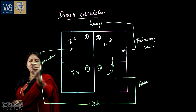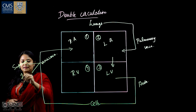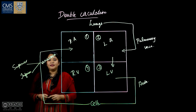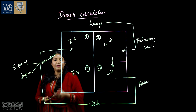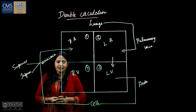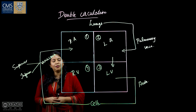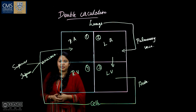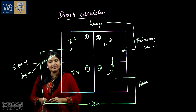The vena cava is divided into two types: superior and inferior. The superior vena cava carries impure blood from the upper portion of our body and enters into the right atrium. The inferior vena cava collects impure blood from the lower portion of our body. Both the superior vena cava and the inferior vena cava enter into the right atrium.